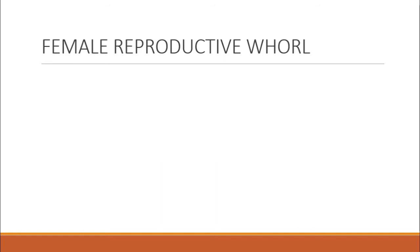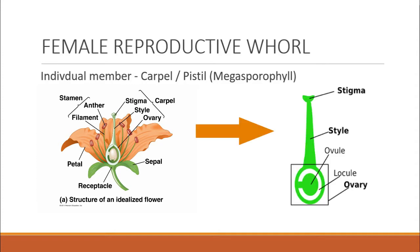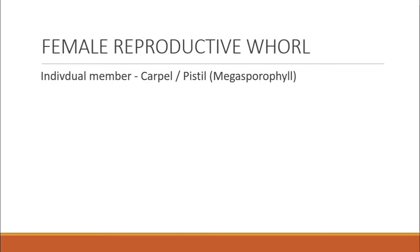Now let's start with the first part — the female reproductive world. The individual members of the gynoecium are called carpel or pistil, which we also call megasporophyll, because it is responsible for the development of the megaspore, which we call the female gametophyte.